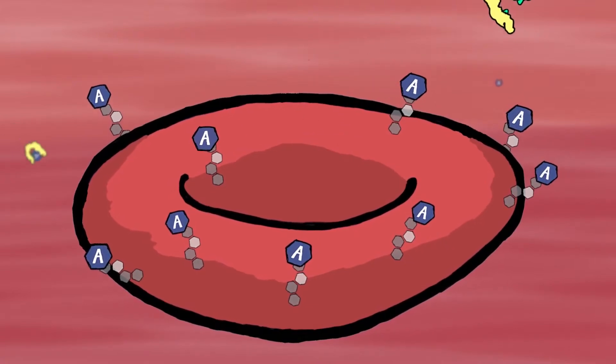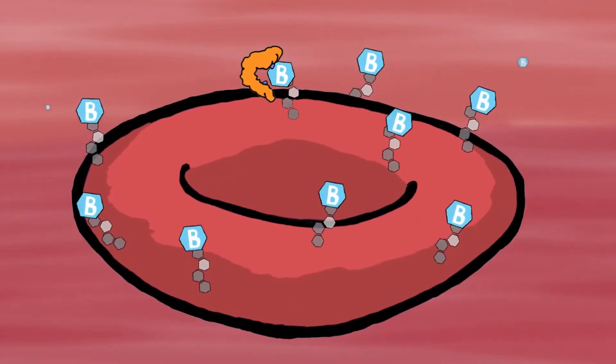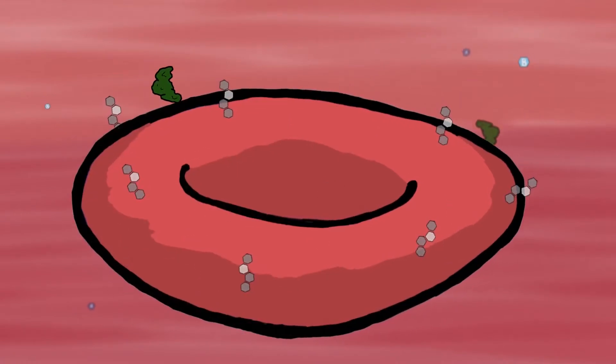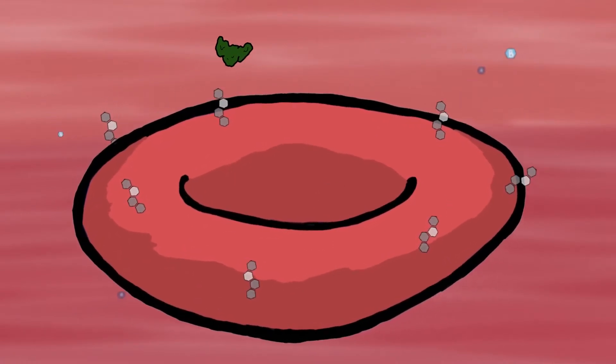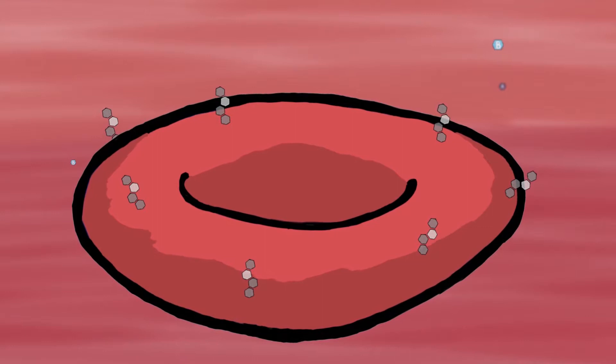The addition of an A antigen, the addition of a B antigen, or no addition at all. And whichever combination of these antigens you have is called your blood type.